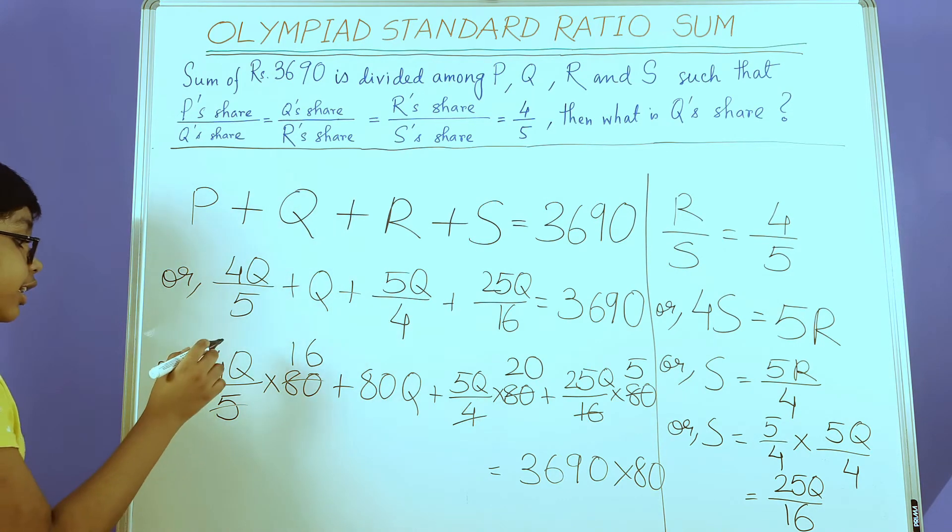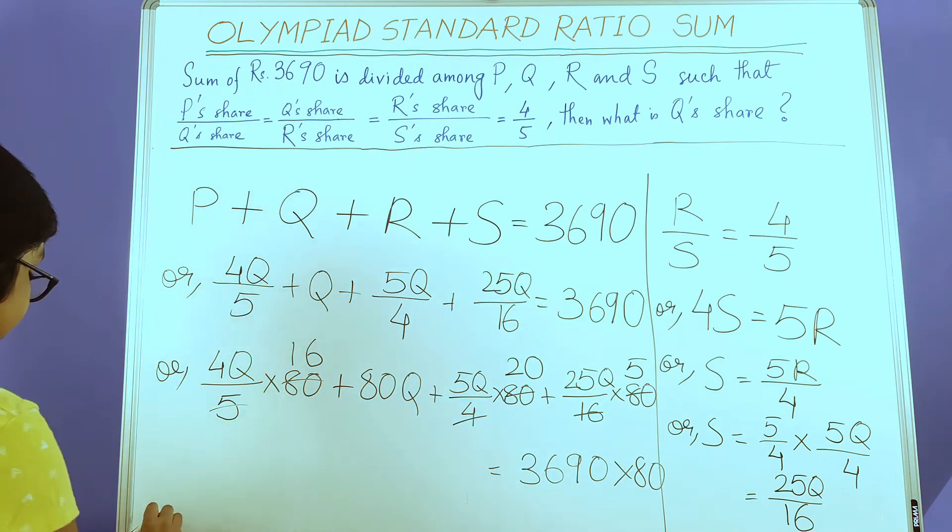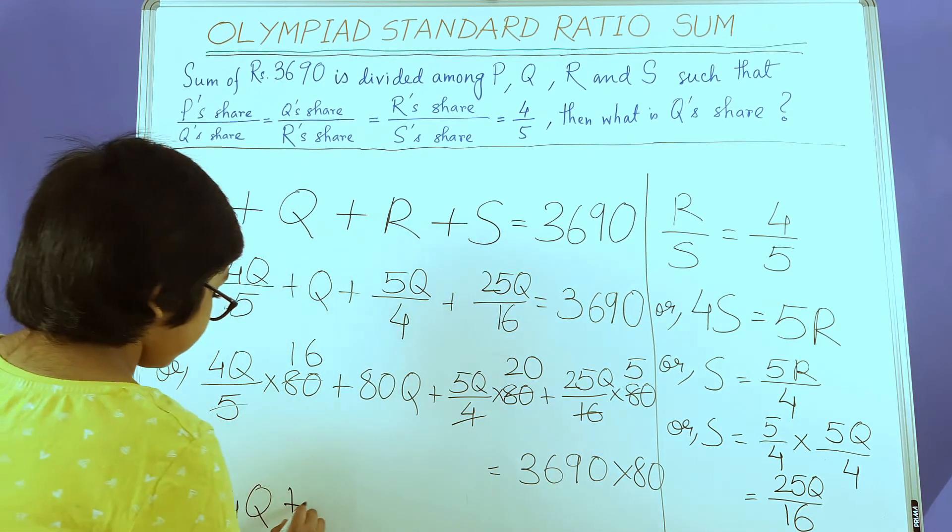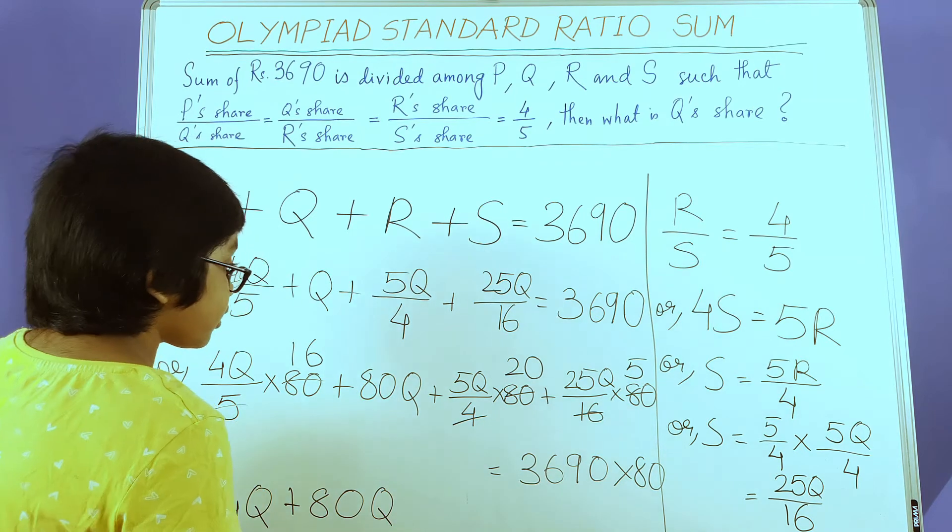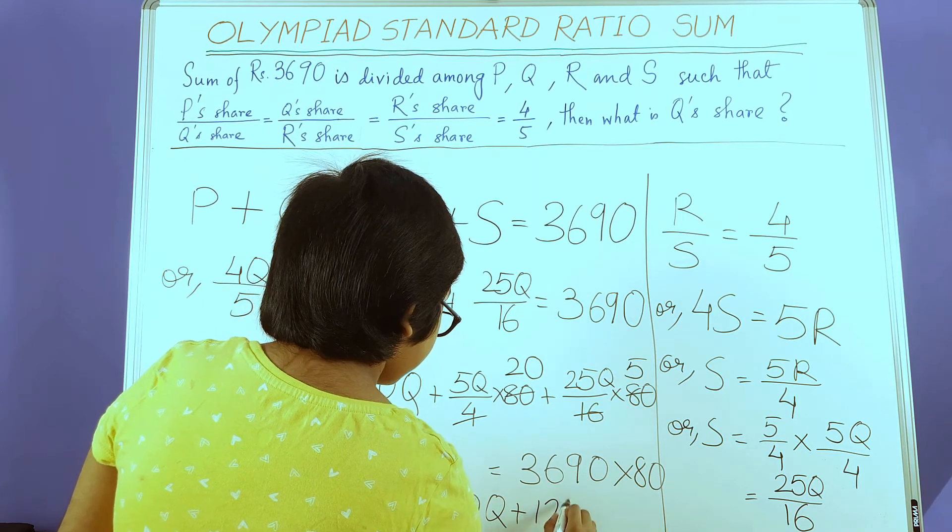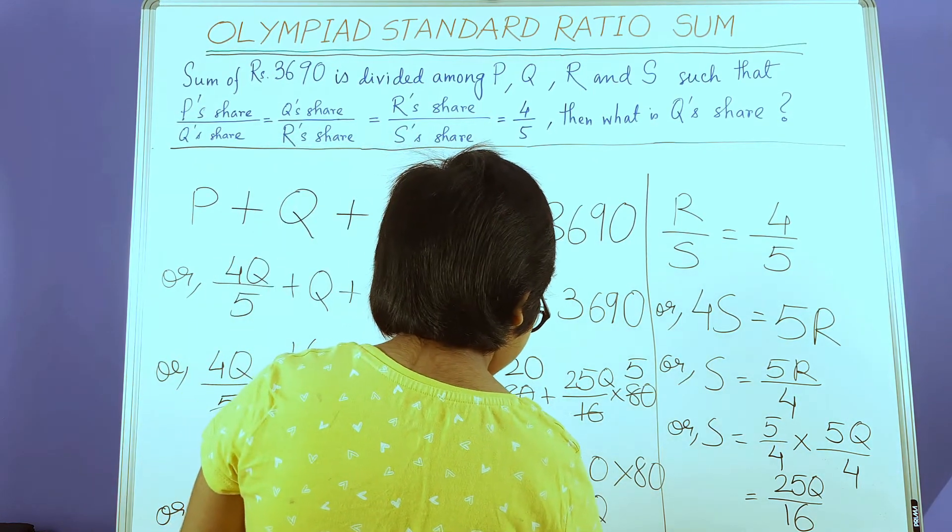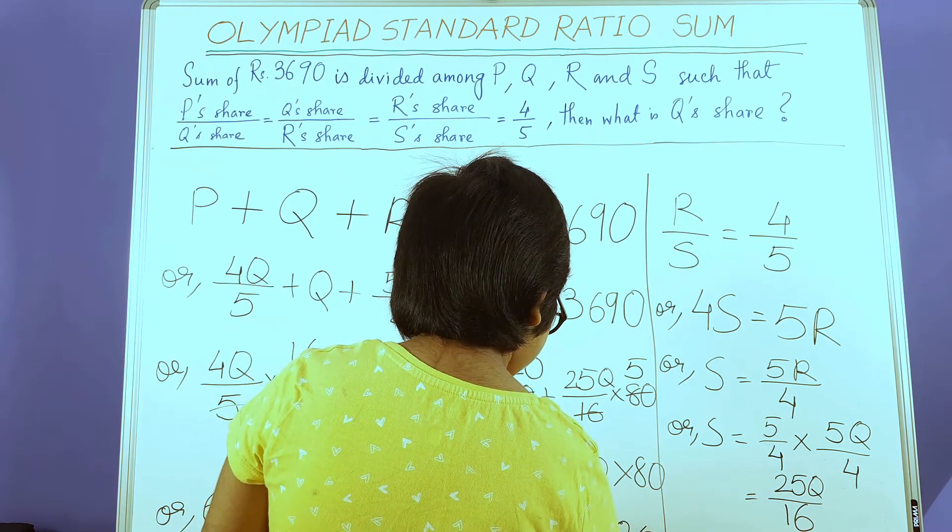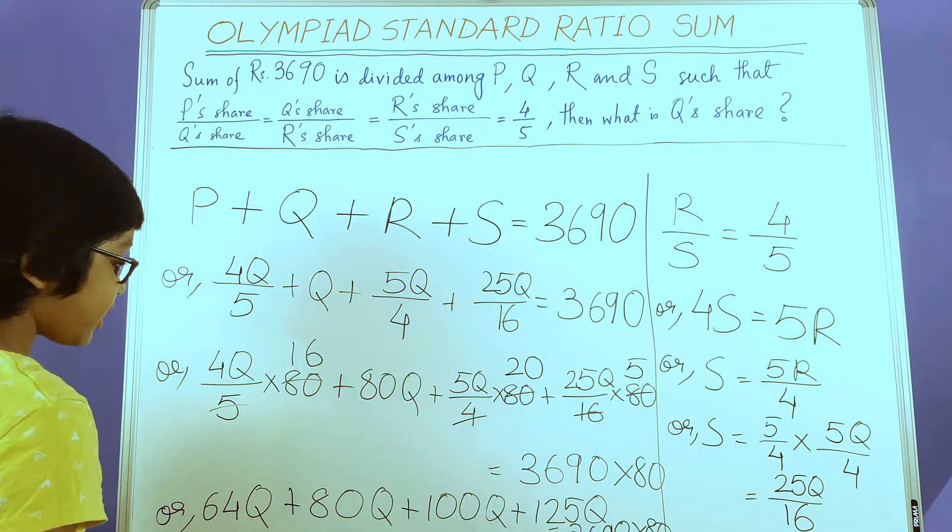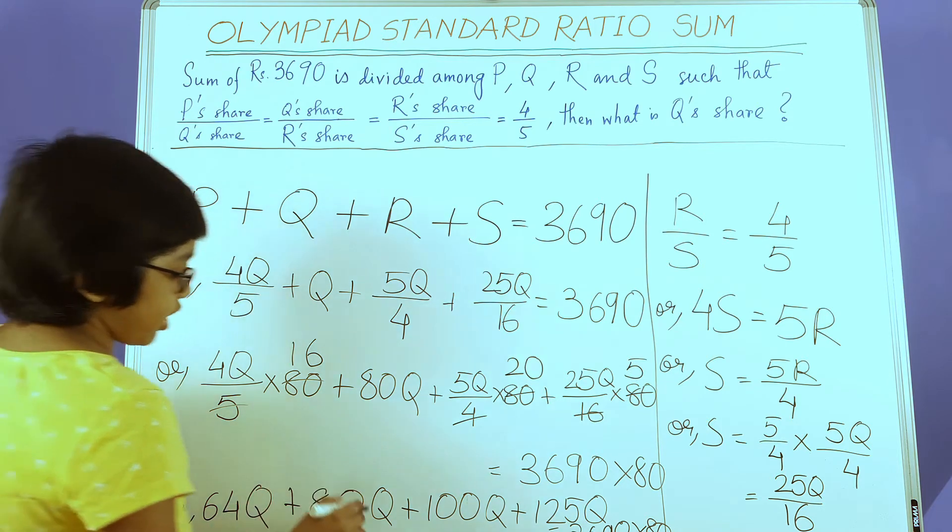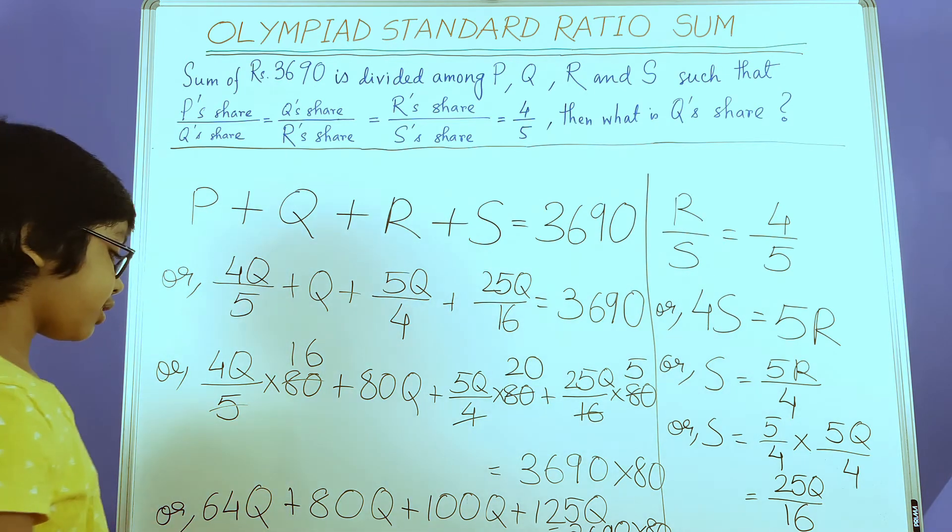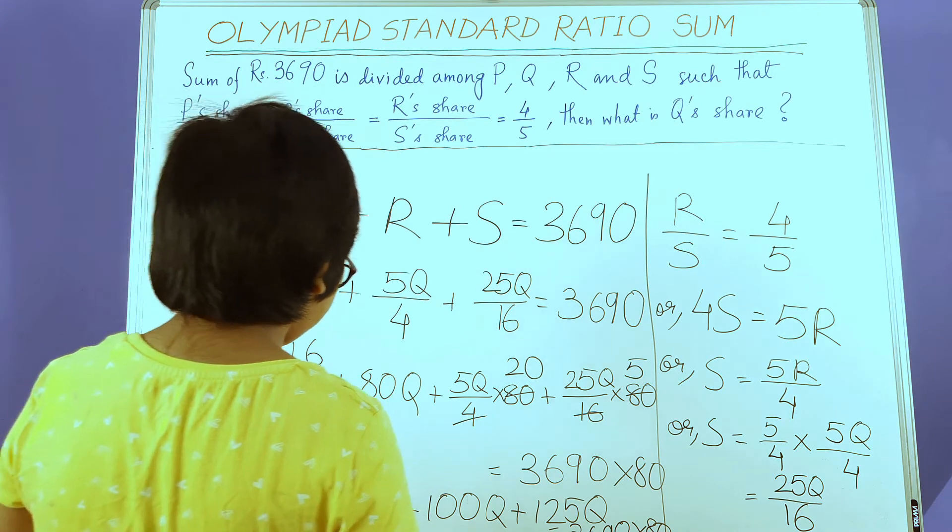This will be 64Q, so 64Q plus 80Q plus 100Q plus 125Q. Now I need to do this addition really quickly. I'm doing it right away. It's 369Q.